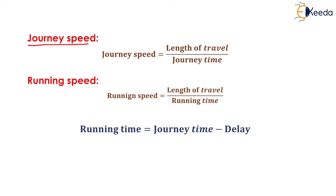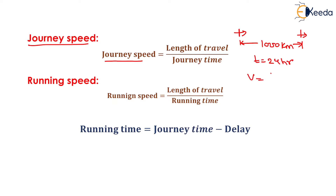Next is Journey Speed, determined by the length of travel divided by journey time. For example, if a driver travels from Madhya Pradesh to Gujarat — a distance of 1000 kilometers — and takes 24 hours, dividing total distance by total time gives the Journey Speed, as it is inclusive of all delays. Running Speed is determined by subtracting delay time from journey time to get running time, then dividing the distance between two points by the running time.